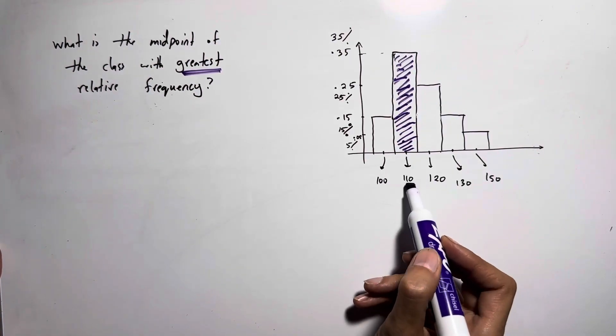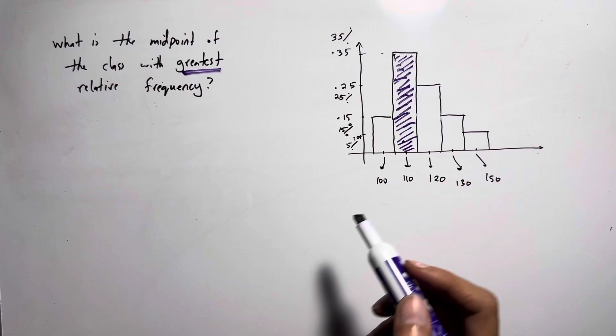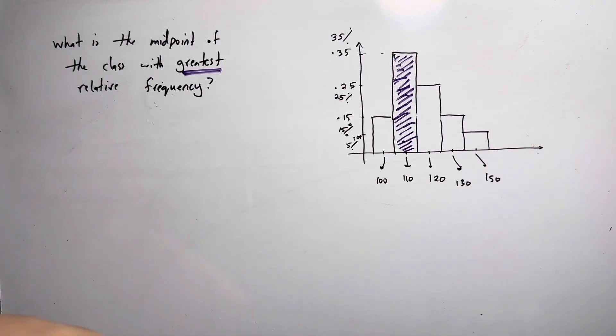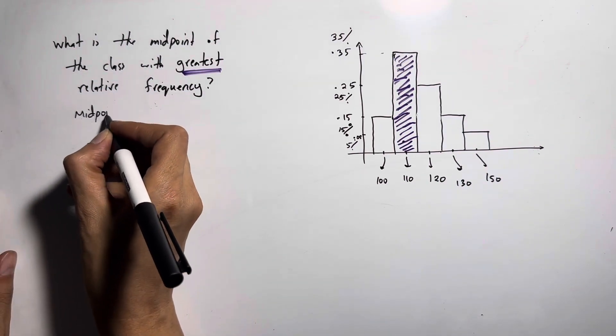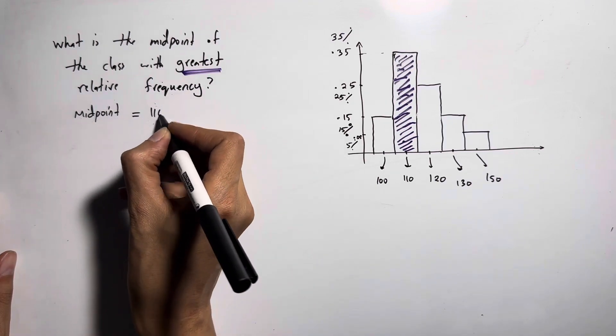So as you can see, the midpoint of the largest bar is 110. So the midpoint or the middle point is 110.